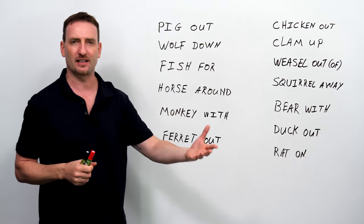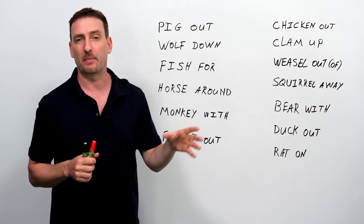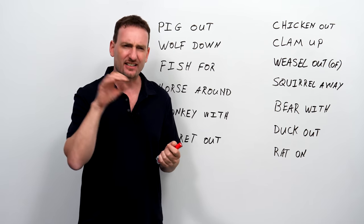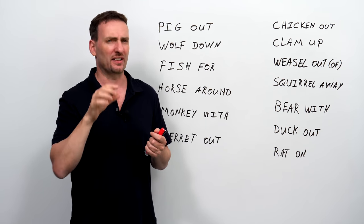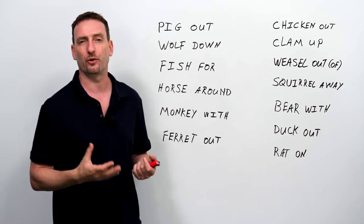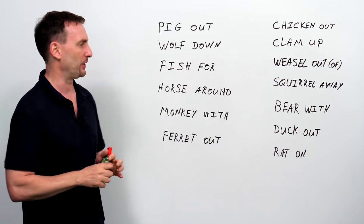So, when a person fishes for something, they're trying to catch some information, or some detail, or some gossip. So, if your friend is asking you a lot of different questions, it seems to you like they're trying to get something specific, then they are fishing for details. They are fishing for gossip. They're trying to catch something from you. So, be careful with them.